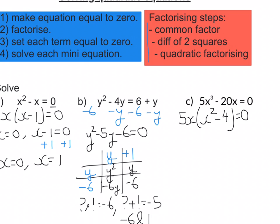Now we've still got a quadratic term, x² - 4. Well, that's the difference of two squares. So we've got 5x(x - 2)(x + 2) = 0.